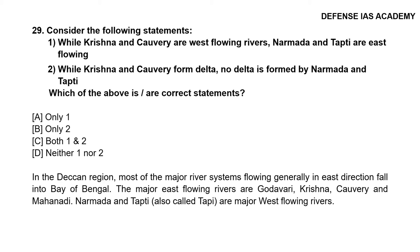Question 29: Consider the following statements: 1. While Krishna and Kaveri are west flowing rivers, Narmada and Tapti are east flowing; 2. While Krishna and Kaveri form deltas, no delta is formed by Narmada and Tapti. The correct option is only 2. In the Deccan region, most major rivers flow eastward and fall into the Bay of Bengal. The major east flowing rivers are Godavari, Krishna, Kaveri and Mahanadi, while Narmada and Tapti are the major west flowing rivers.